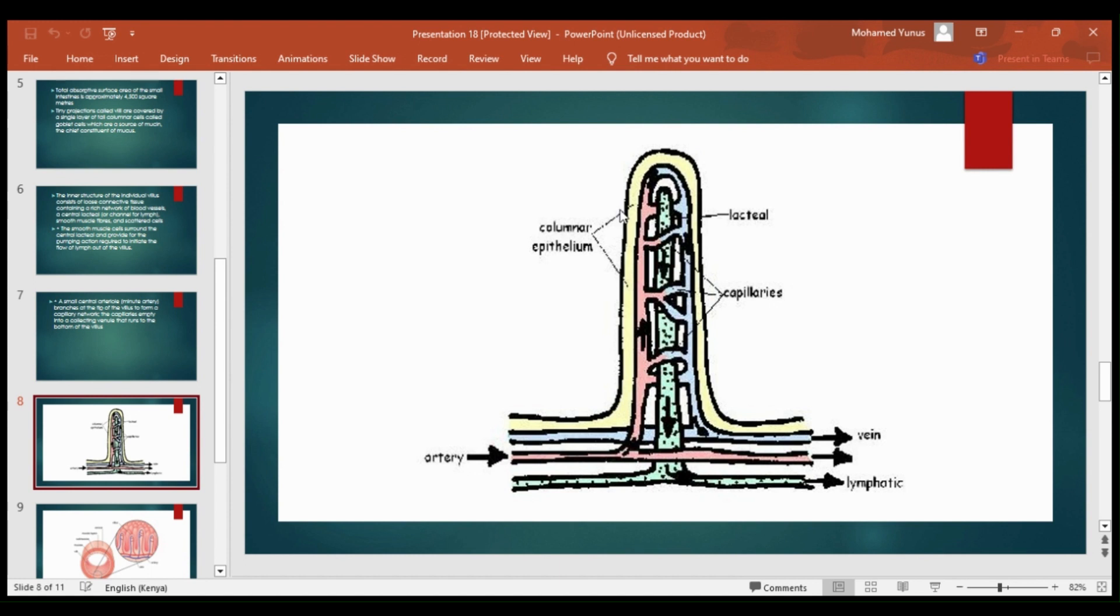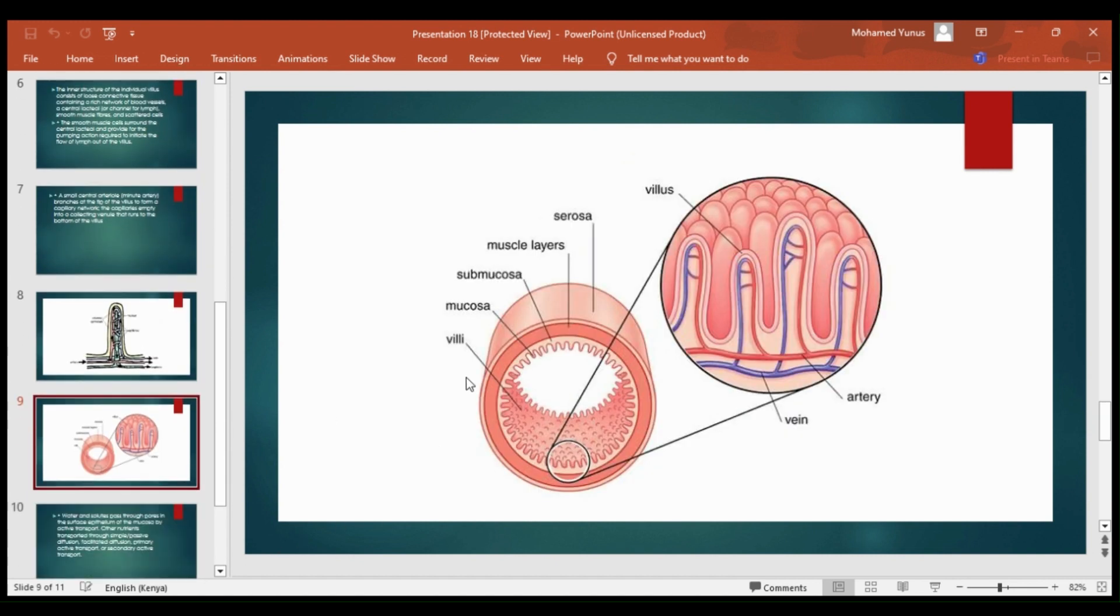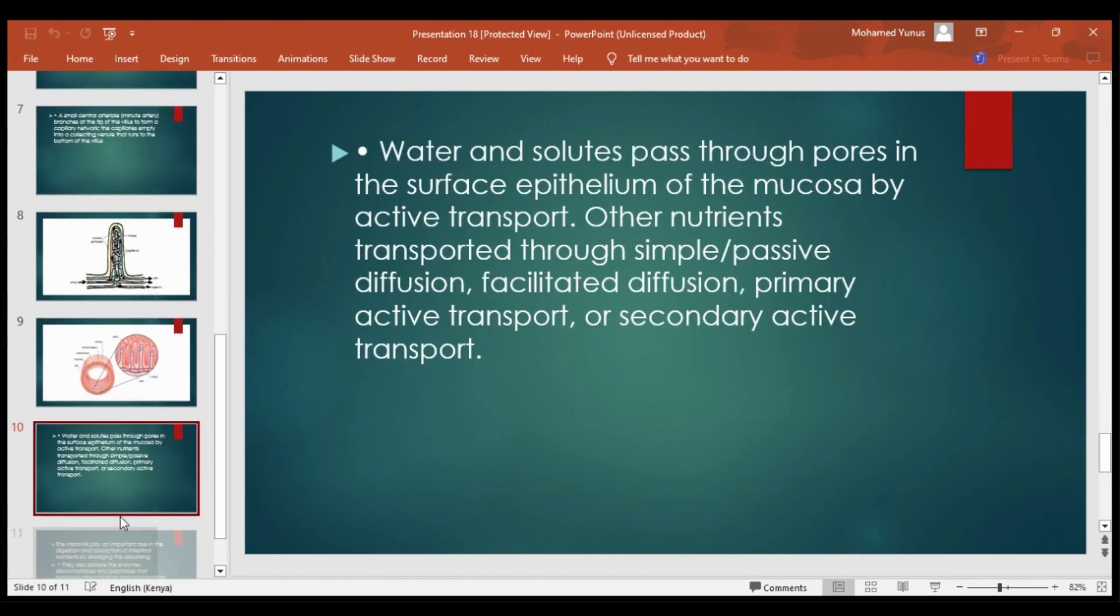The lacteal and lymphatics are shown here in the diagram, with lymph flowing out. This is how the villi look in the small intestine—they surround the entire small intestine. We are going to discuss the function of these villi found in the small intestine.